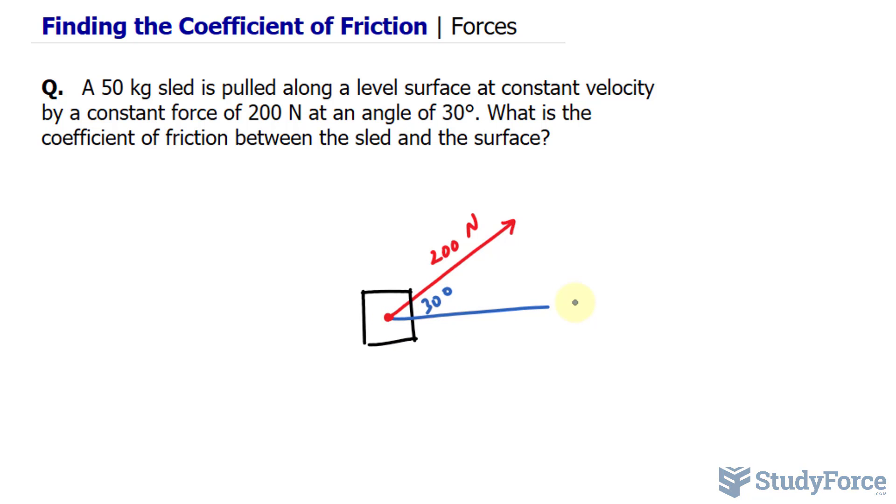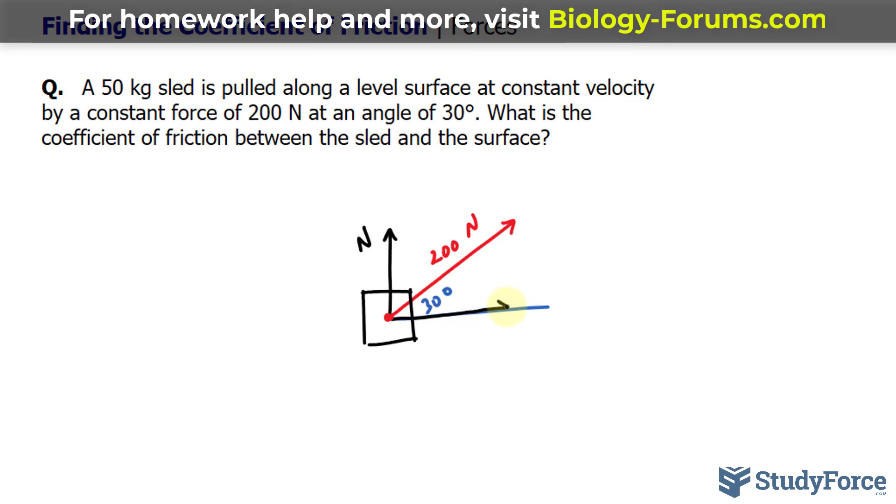What we can do is break this vector into its x and y components. The y component, which I'll represent with this black vector, will represent the normal vector, the one that goes directly up. And the x component, which I'll represent with this other vector, will be used later to help us find the coefficient of friction.